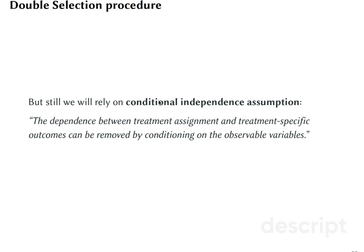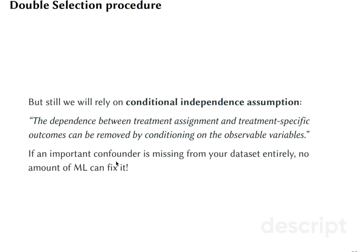There is still one important assumption that allows you to interpret the coefficients that you find using double selection procedure. This is the conditional independence assumption, meaning that the dependence between treatment assignment and treatment-specific outcomes can be removed by conditioning on the observable variables. So if you do not have an important confounder in your data set in the first place, no amount of machine learning will fix it. This is something important you have to keep in mind.